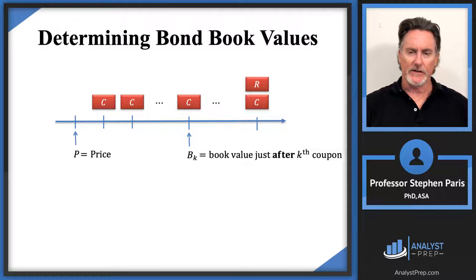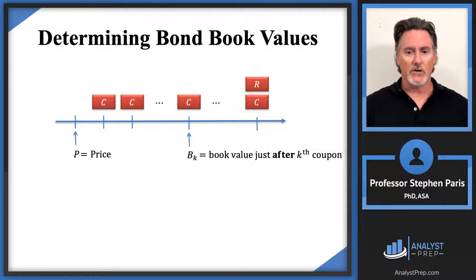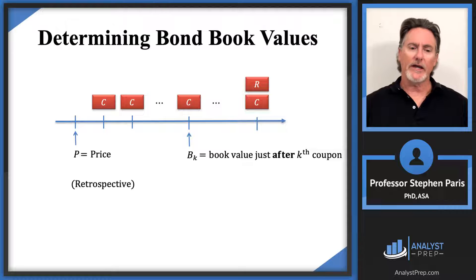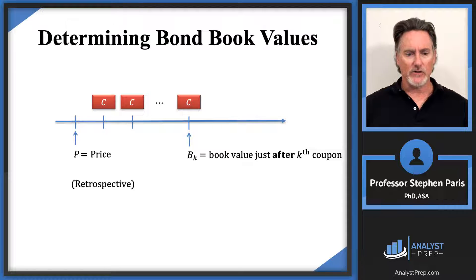Lots of problems, like with loans, have to deal with calculating the B_k value — either that's the end result or it's going to be an intermediate step along the way. So let's look at how we determine book values. The cap B's are book values instead of balances. As with loans, there's a retrospective and a prospective way. Retrospectively means we're looking in the past, not concerned about the future, so we take the values on the timeline and delete off the future values.